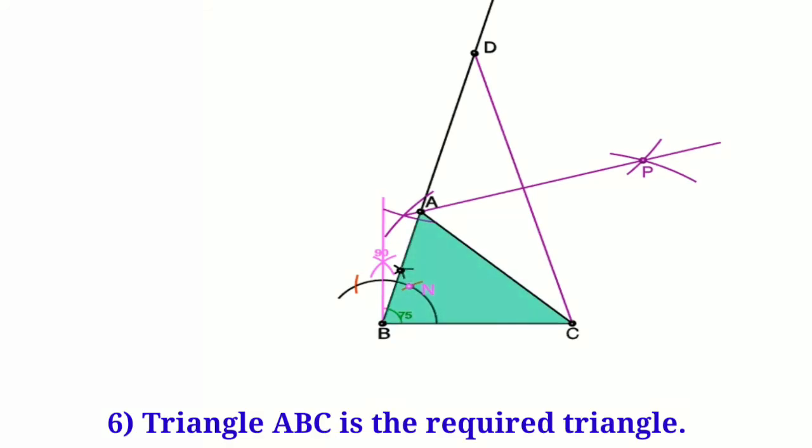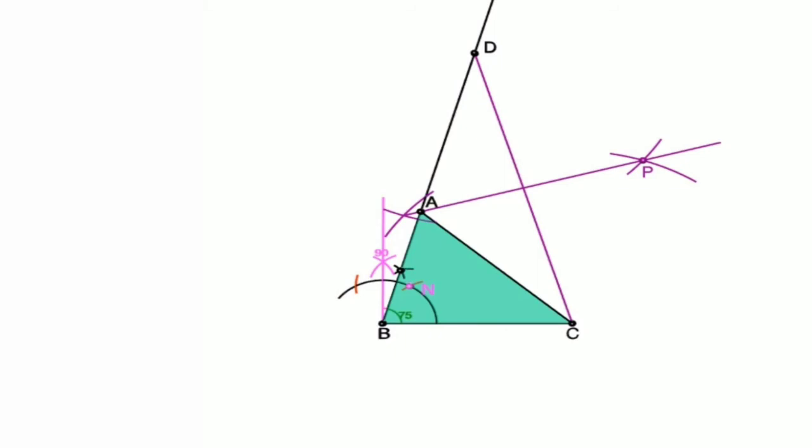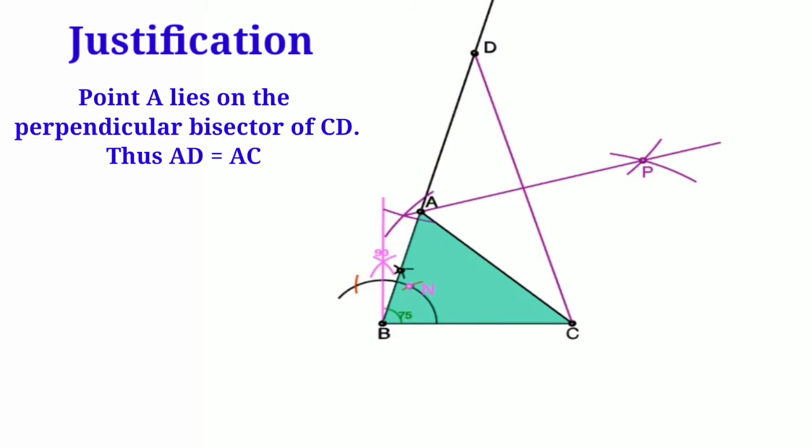And that's how we get the triangle ABC. Now let's see the justification. That is very easy, we'll just go through it. Point A lies on the perpendicular bisector of CD, thus AD equals AC.